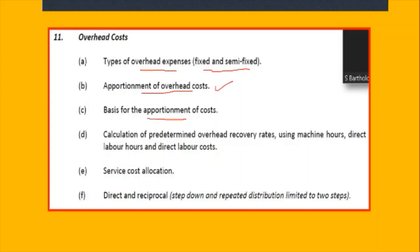The syllabus covers the step-down and direct and continuous allotment methods. They promised not to give more than two steps down, but we have had questions with more than two. Calculation of predetermined overhead recovery rates uses just three bases: machine hours, direct labour hours, and direct labour cost. You should not be tested outside of those. Service allocation — the allocation of service cost departments — is where your reciprocal and direct methods come in: step down and repeated distribution, limited to two steps.